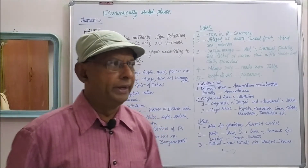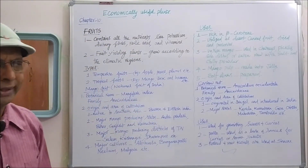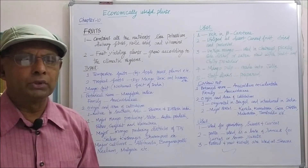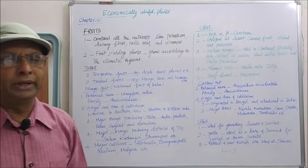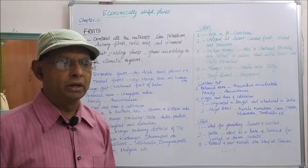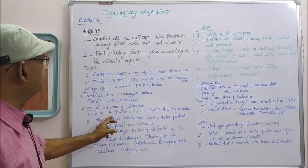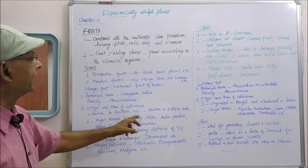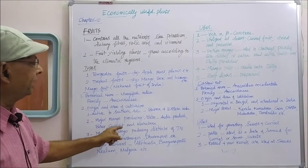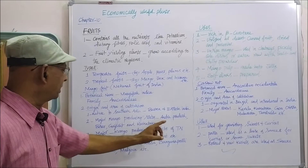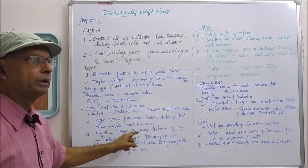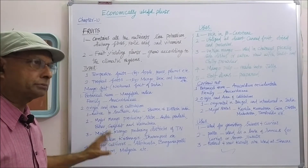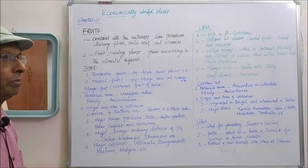The mango fruit is native to Southern India, Southern Asia, especially Burma and Eastern India. Major mango fruit producing states are Andhra Pradesh, Bihar, Gujarat, and Karnataka. Major mango producing districts of Tamil Nadu are Salem, Krishnagiri, and Dharmapuri. In these three districts of Tamil Nadu, plenty of mango plants are growing.